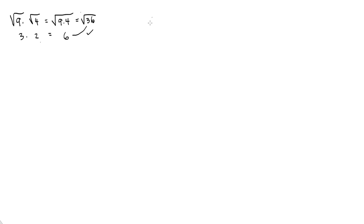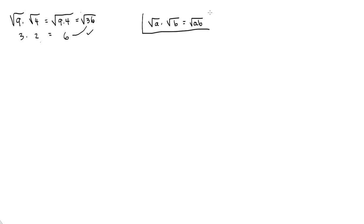So what are we saying? Let's write it in algebra form: radical A times radical B equals radical A times B. That is a perfectly acceptable thing to do.